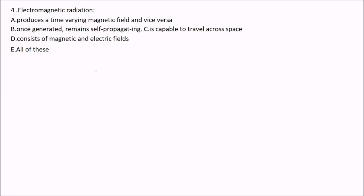Next: electromagnetic radiation. It produces a time-varying magnetic field and vice versa. Once generated, it remains self-propagating. It is capable of traveling across space and consists of magnetic and electric fields. The answer is E — all of these. Electromagnetic radiation produces a time-varying magnetic field, remains self-propagating (though attenuation occurs), can travel across space, and consists of magnetic and electric fields.